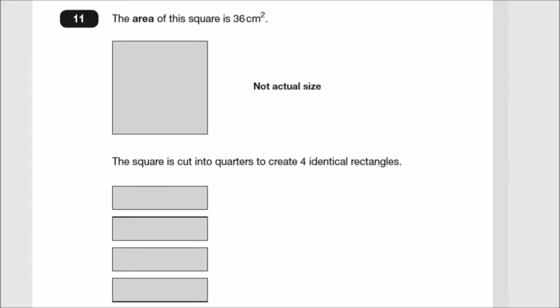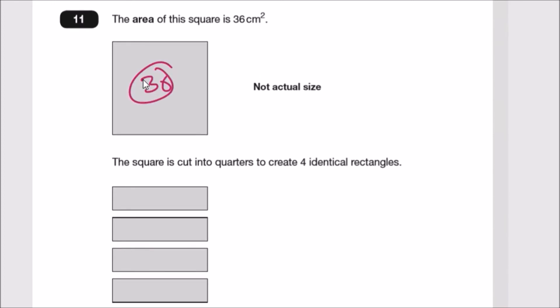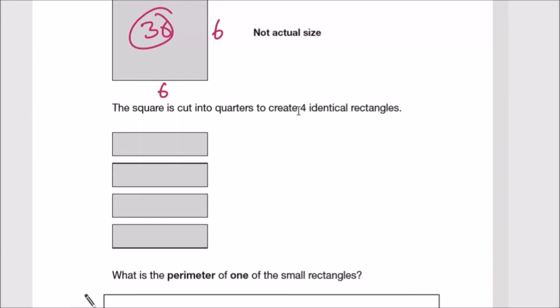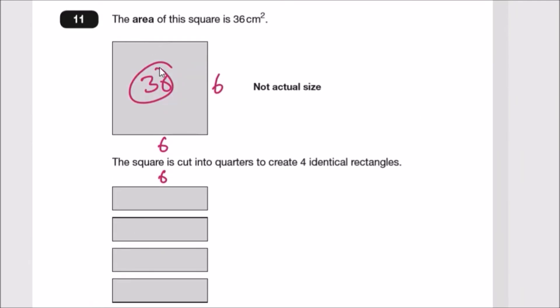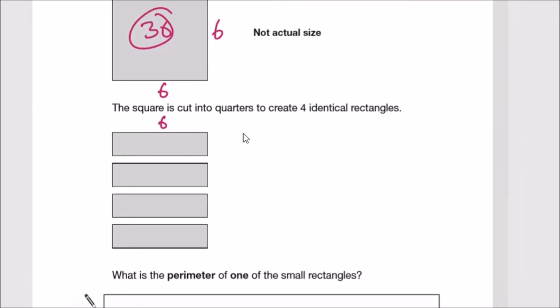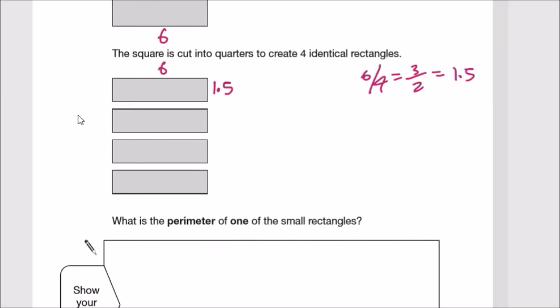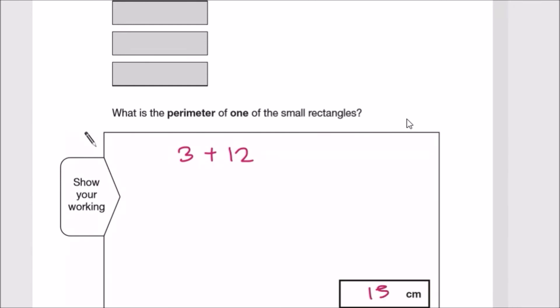Number 11: The area of the square is 36. If it's 36 square centimeters and it's a square with equal lengths, this is a 6 by 6 square since 6 times 6 is 36, or the square root of 36 is 6. The square's cut into quarters to create four identical rectangles. If we split this side by 4, that means 6 divided by 4 is 6 over 4 or 1.5. What is the perimeter of one small rectangle? We've got two 1.5s, that's 3, and two long lengths which is 12, so 3 plus 12 is 15 centimeters.